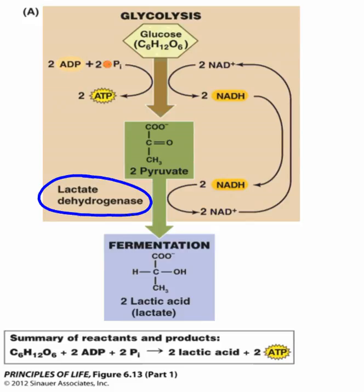After pyruvate has been formed, the enzyme acts on pyruvate, and pyruvate is reduced, because the NADH that was just made ends up being oxidized to form NAD+ again, and of course we just have a cyclic nature going here. Once the lactate dehydrogenase has catalyzed the reaction, the end product is lactic acid.